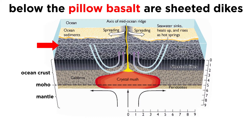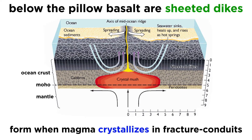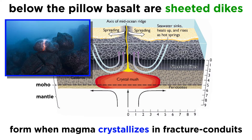Underneath the pillow basalt is a layer of rock called sheeted dikes. Dikes are a sort of underground plumbing system that bring magma from the mantle upward toward the ocean floor. They are essentially fractures caused by extensional faulting that act as magma conduits. Sheeted dikes are formed when the rising magma crystallizes within the fracture conduits, instead of extruding from the ocean floor to form pillow lava.